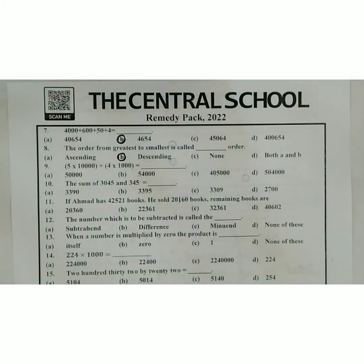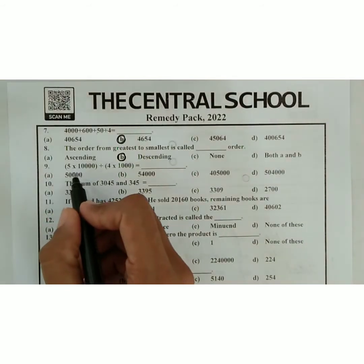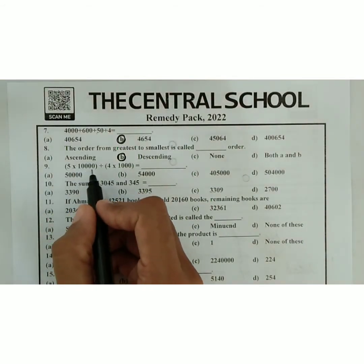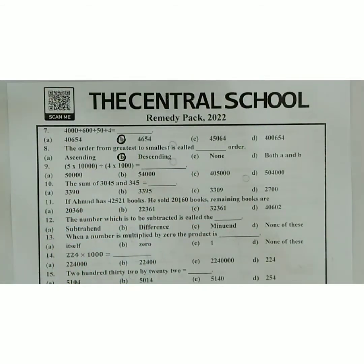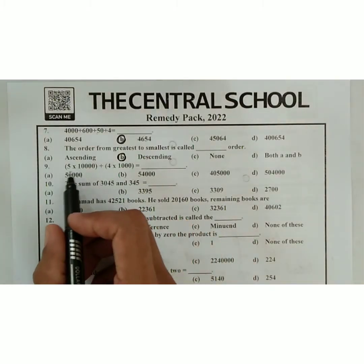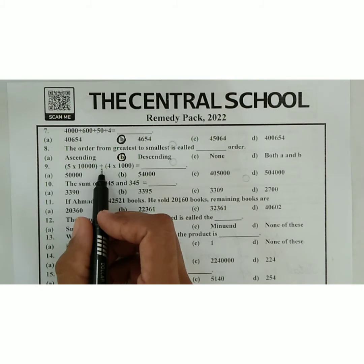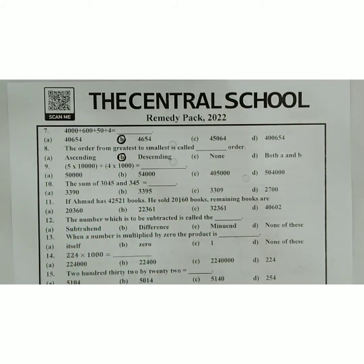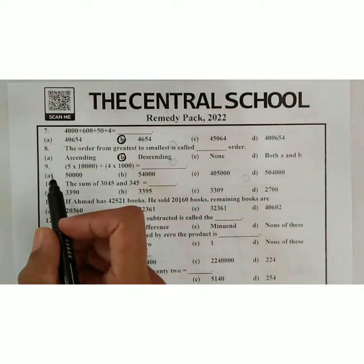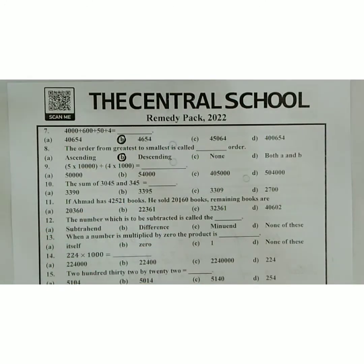Next, we have question nine: five multiplied by ten thousand, plus four multiplied by one thousand. Students, we first have to multiply these two values, then add them to get the answer. To solve this MCQ number nine, we move towards the board.